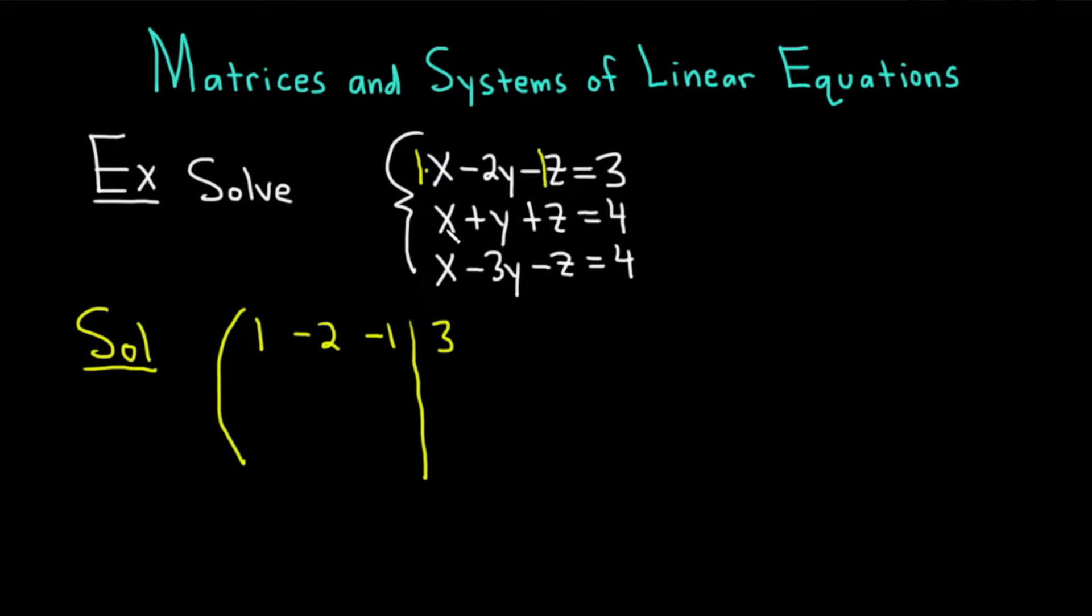And then there's a negative 1 here in front of the z. And then you draw a line like this. And then over here you put the 3. Go to the next equation. So 1, 1, 1, 4. And the last one would be 1, negative 3, 1, negative 1, and then 4.